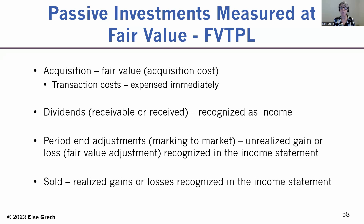When the investment is sold, the difference between the cash received and the carrying value of the investment is reported as a realized gain or a realized loss on the income statement. Keep in mind that this realized gain or loss is the difference between the current carrying value and the cash received — not the difference between the original acquisition cost and the cash received. Why? Because every single time you made an adjustment at each reporting period, you're already reflecting the fair value. So at the date of sale, your gain or loss is only the difference between the cash you received and the current carrying value.